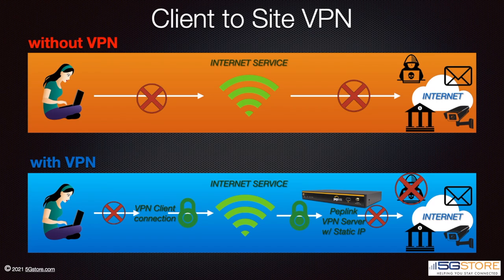Client-to-site VPN connections include L2TP with IPsec, PPTP, and OpenVPN. As an example, let's say we're at the local coffee shop, connected to their free Wi-Fi with our laptop. If we want to do some online banking securely, we can connect to the Peplink router at our home using any of these VPN connections.